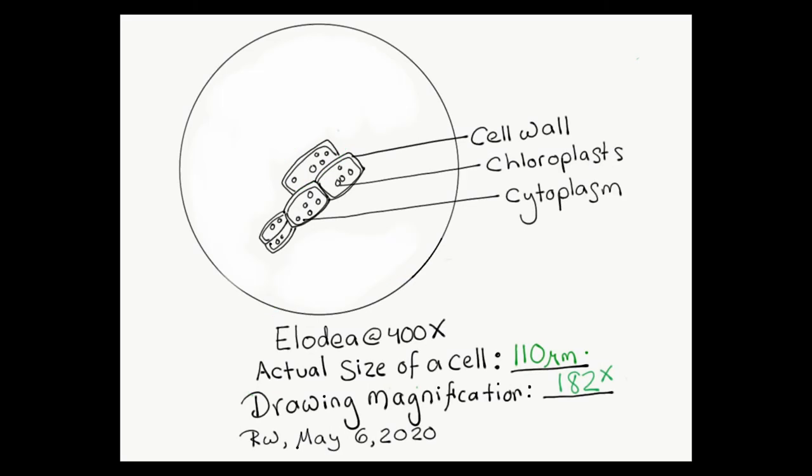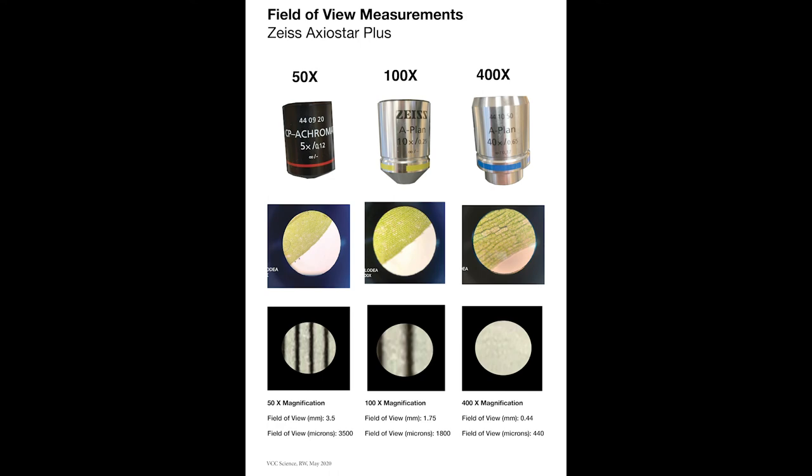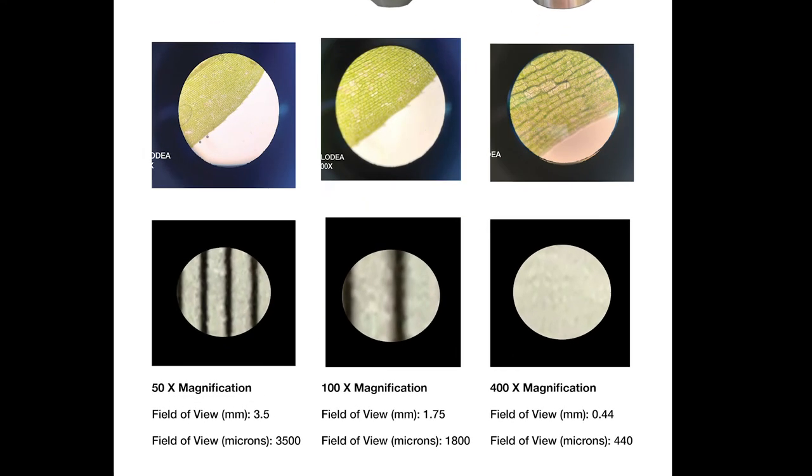Now we've learned how to measure the size of an object under the microscope, and how to calculate the drawing magnification. In this example, we did our estimates at 400 times power. However, sometimes it's more appropriate to use the 50 or 100 times power. In that case, just follow the same procedures, but substitute in the appropriate field of view value for that magnification.